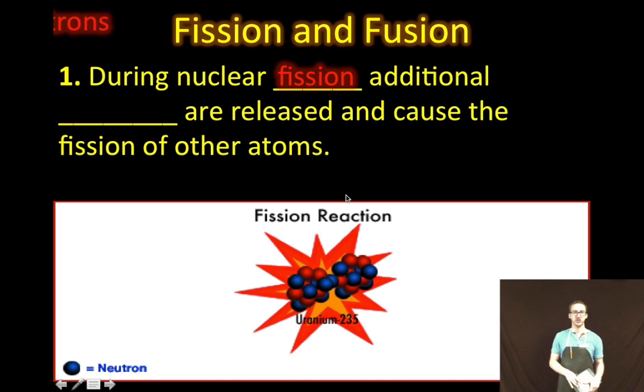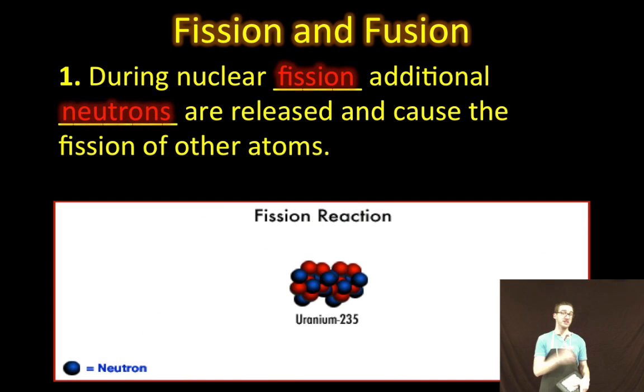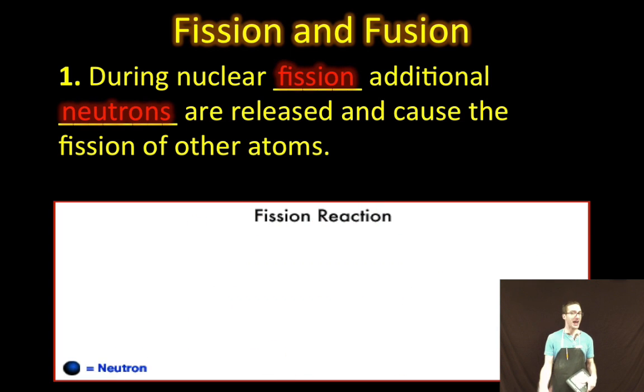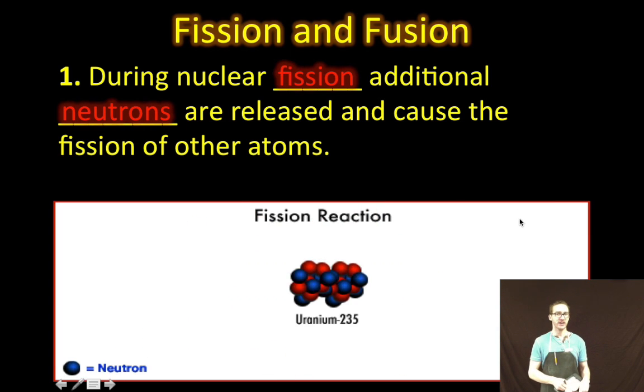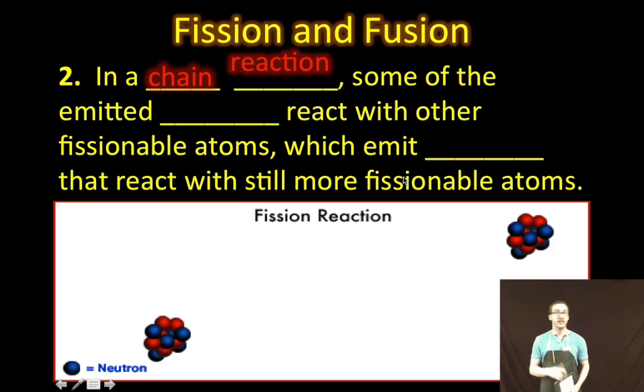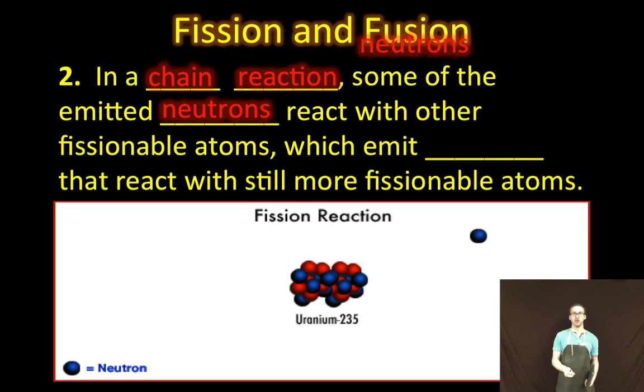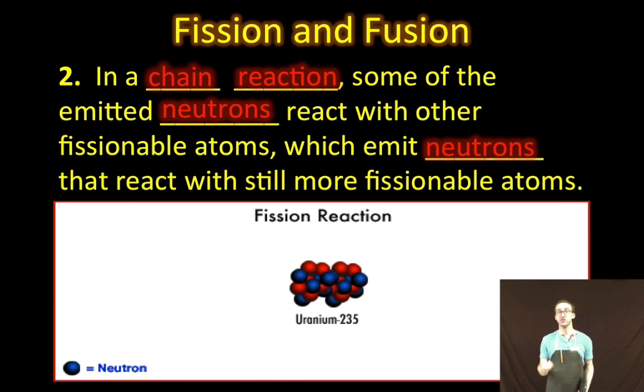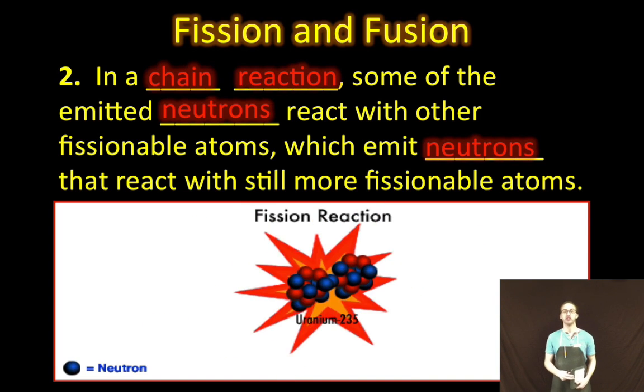A couple things about fission reactions. Additional neutrons are released and cause the fission of other atoms. So as you watch this animation again and again, you see these little blue neutrons going flying away that could then fission other atoms. Keep in mind then that a chain reaction occurs when some of those emitted neutrons react with other fissionable atoms and emit neutrons that react with even more fissionable atoms. We start a chain reaction.